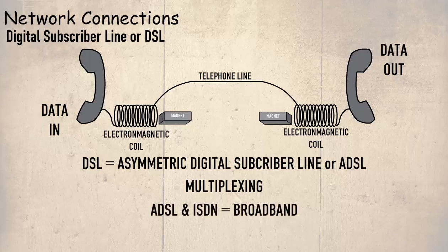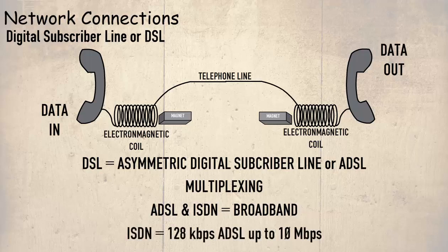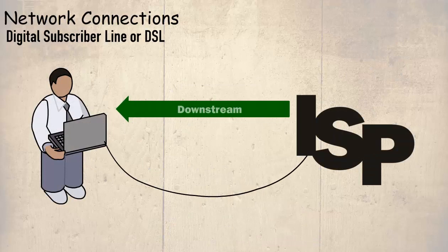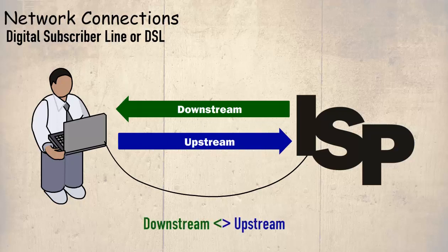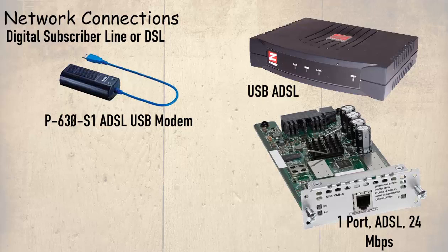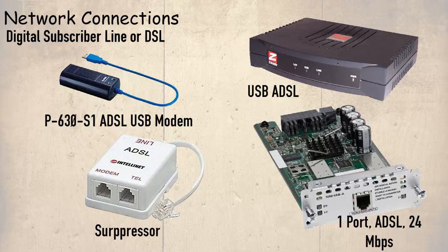ADSL is similar to ISDN as they both use broadband technologies to achieve greater speeds. However, ADSL can achieve much higher speeds than the 128 kbps provided by ISDN, reaching over 10 Mbps using the latest DSL standards. The bitrate of ADSL is greater towards the customer premises, known as downstream, than the reverse, known as upstream. This is why it is called asymmetric, because the downstream does not match the upstream. The interfaces come in different forms, internally or externally. Also, to reduce the crossover noise from the telephone signal and the broadband signal during the multiplexing process, a suppressor can be fitted.